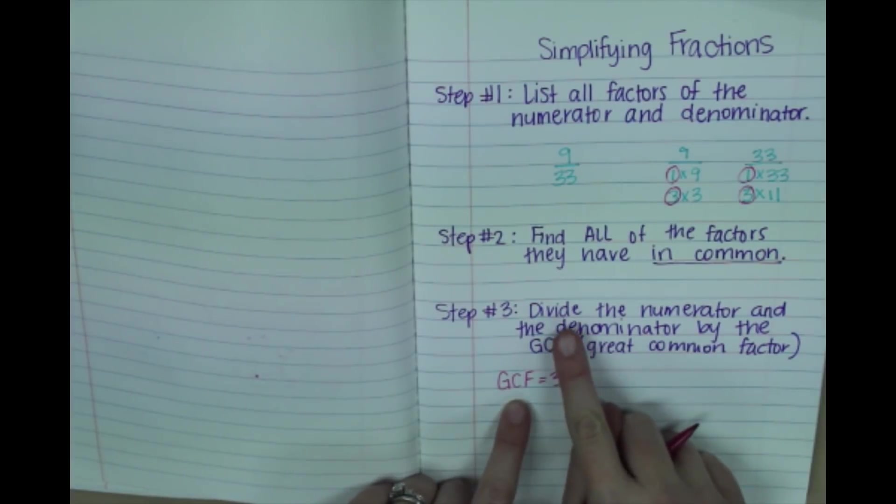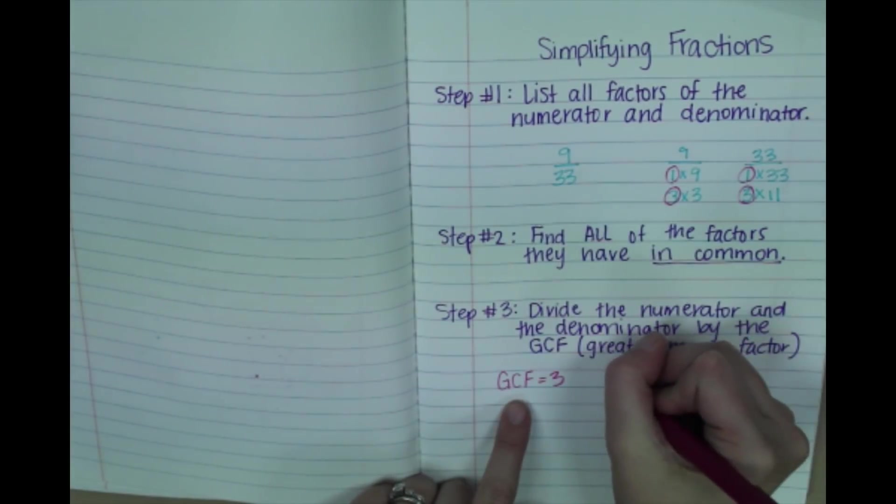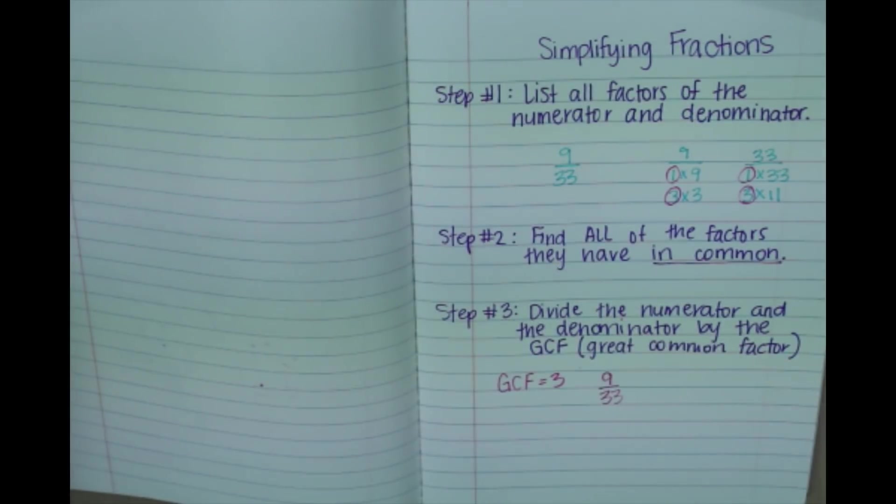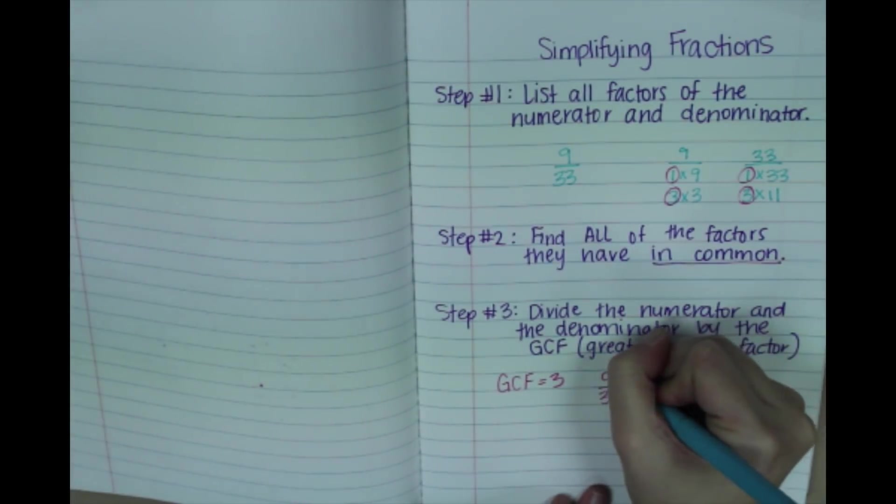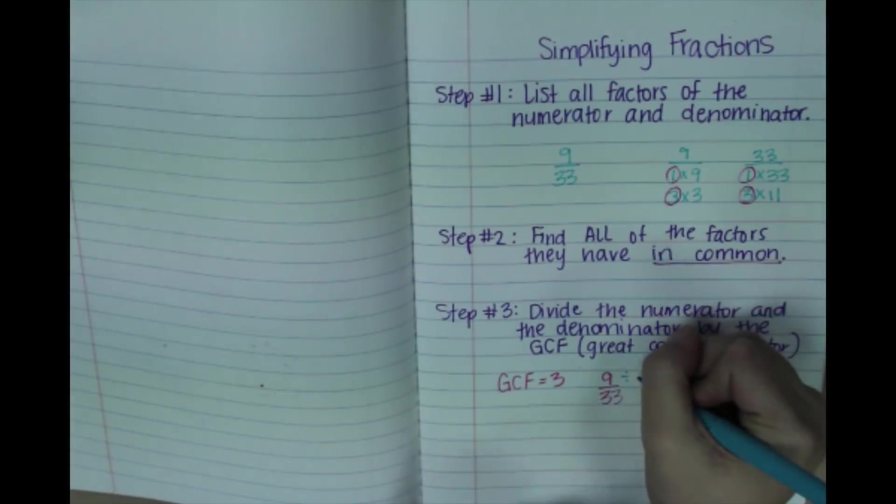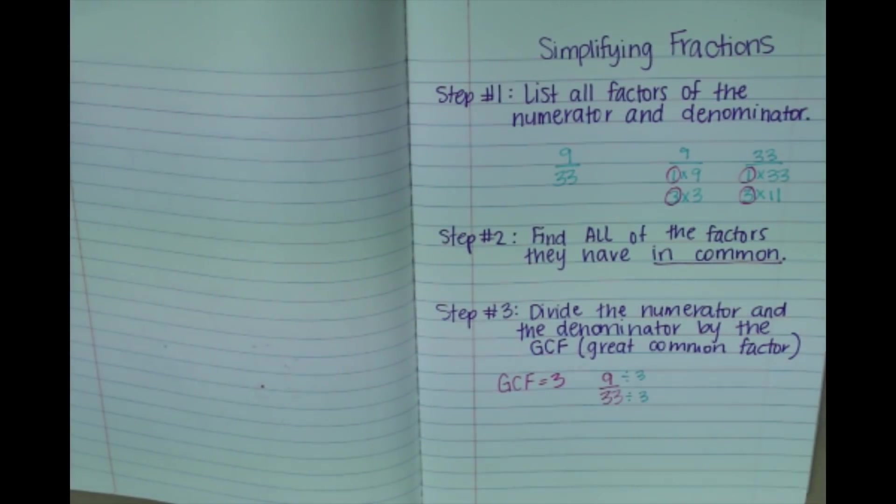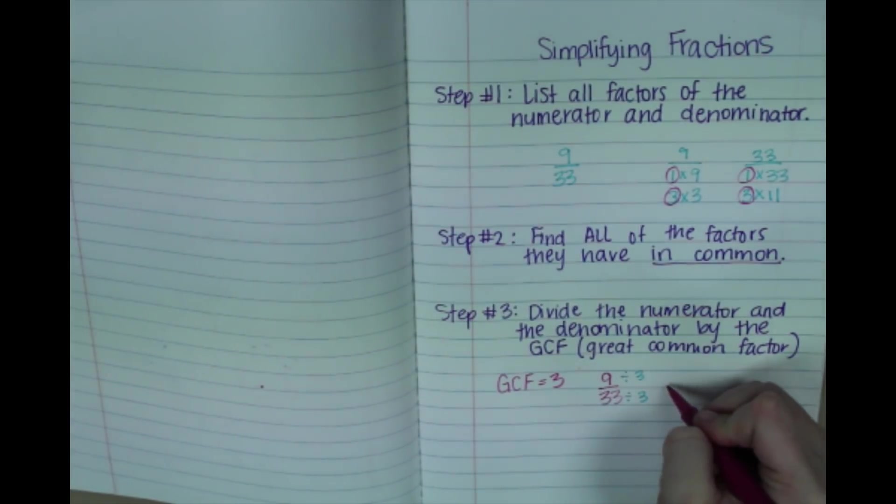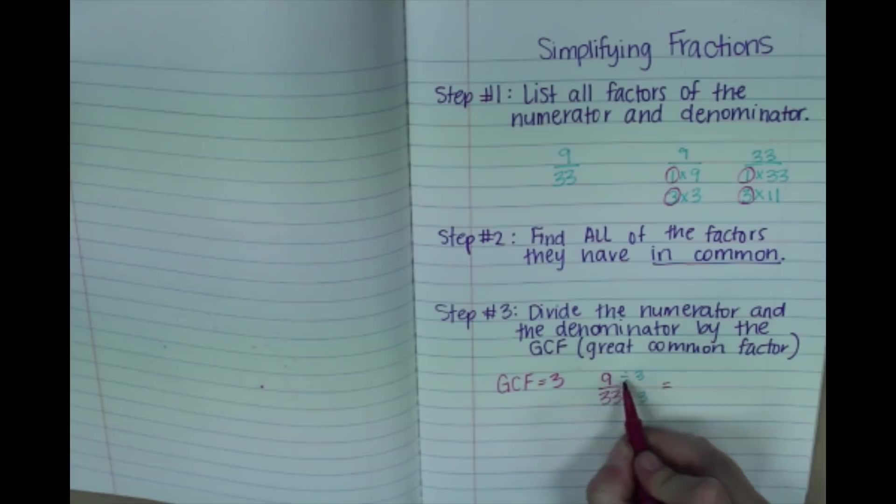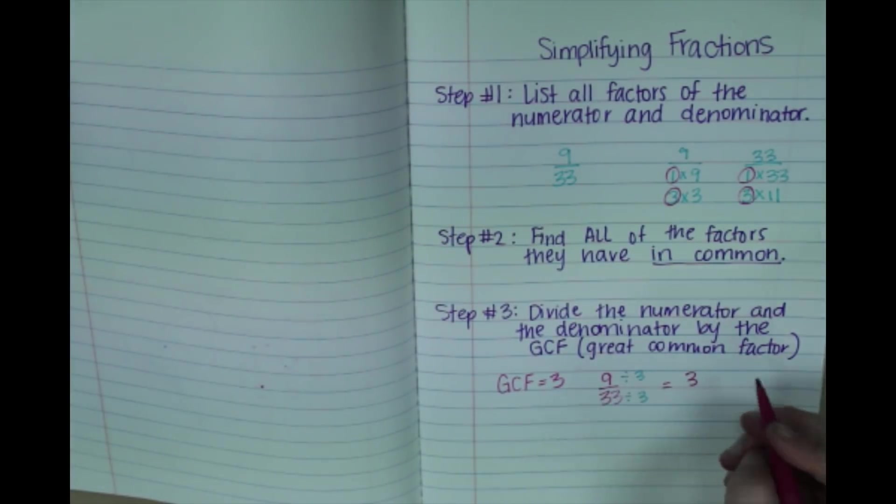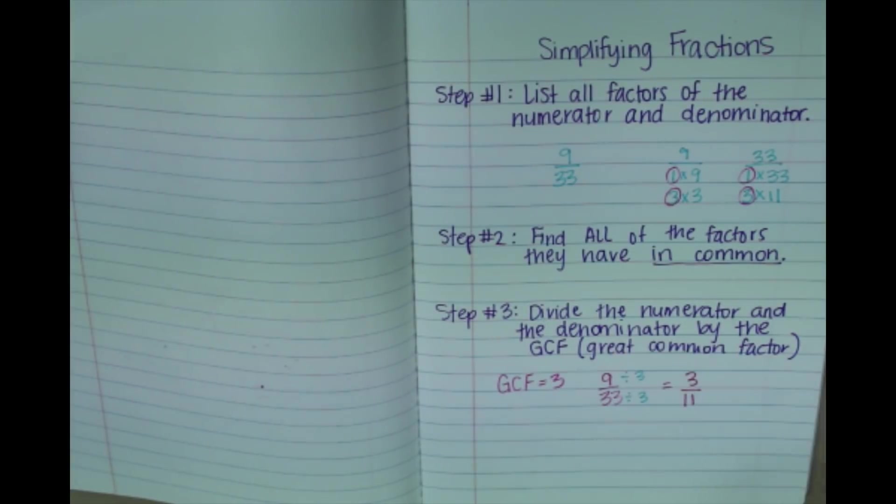GCF is 3. So we're going to take our fraction of 9 over 33 and divide both by our GCF, which is 3. Okay, this is going to simplify our fraction for us. So when we divide, we just divide straight across. 9 divided by 3 is 3. 33 divided by 3 is 11. Okay.